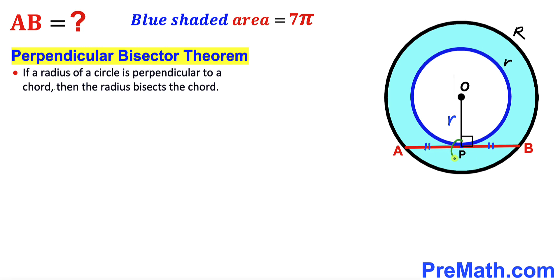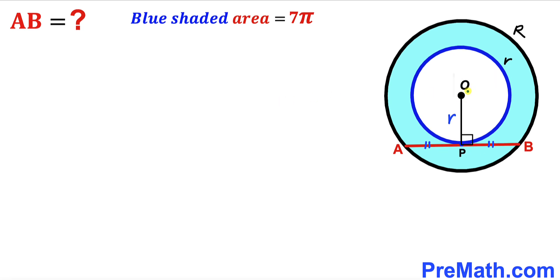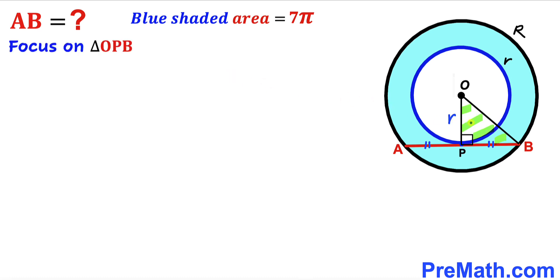Therefore point P is the midpoint of chord AB. Now I am going to connect center O with vertex B. As a result we get a right triangle OPB. We can observe that OB represents the radius of the large circle, so OB equals uppercase R. Let's assume segment PB has length x, then AP also equals x.